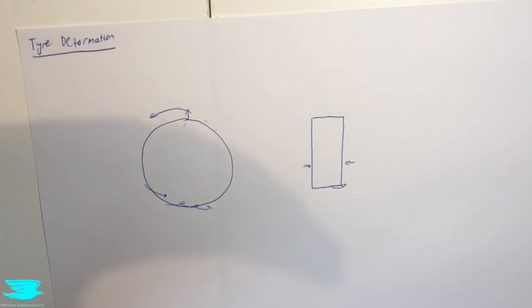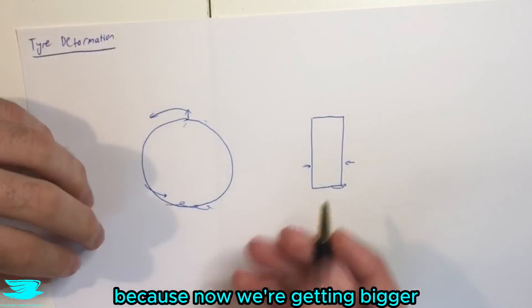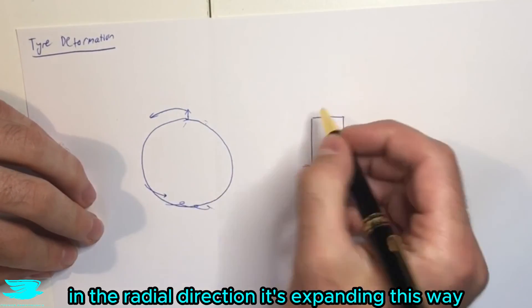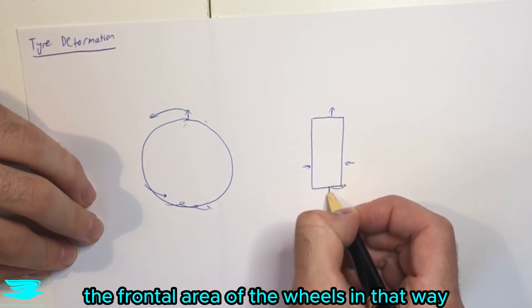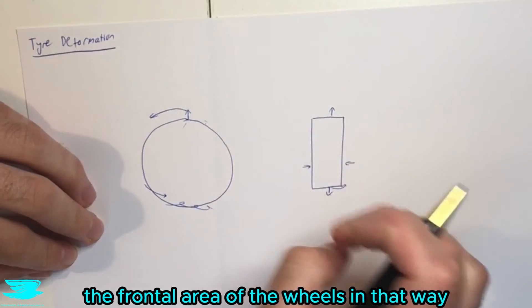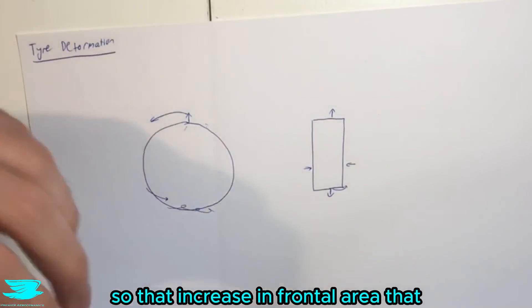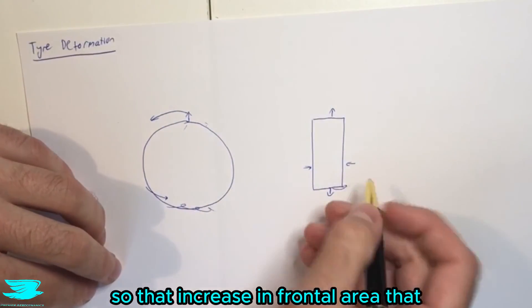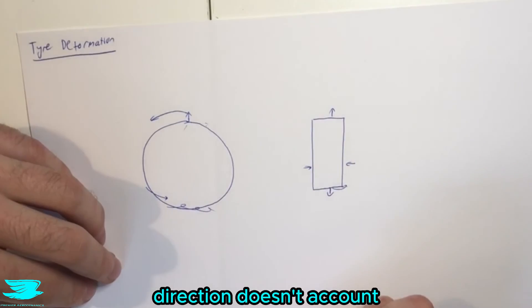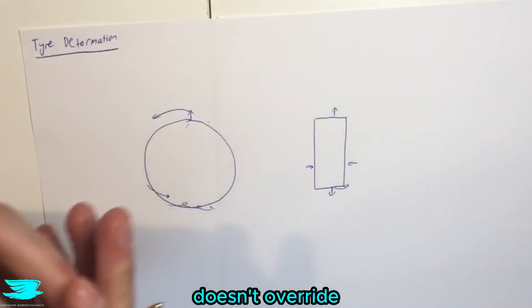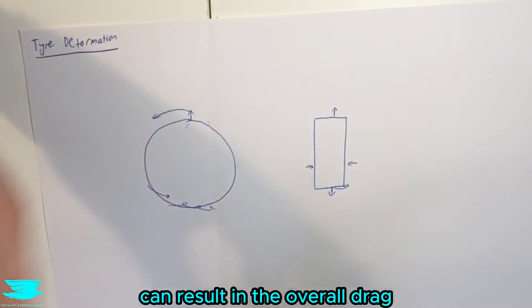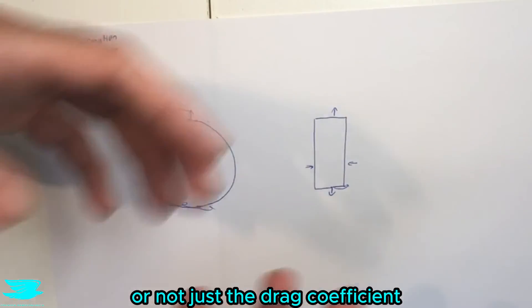And also, the area that these wheels actually take up, because now we're getting bigger in the radial direction, it's expanding this way, the frontal area of the wheels in that way sometimes increases. So that increase in frontal area that this reduction in the axial direction doesn't account, doesn't override, can result in the overall drag of the car actually increasing as well, not just the drag coefficient.